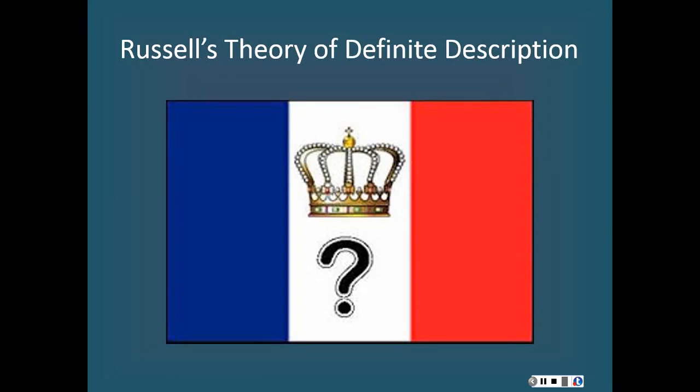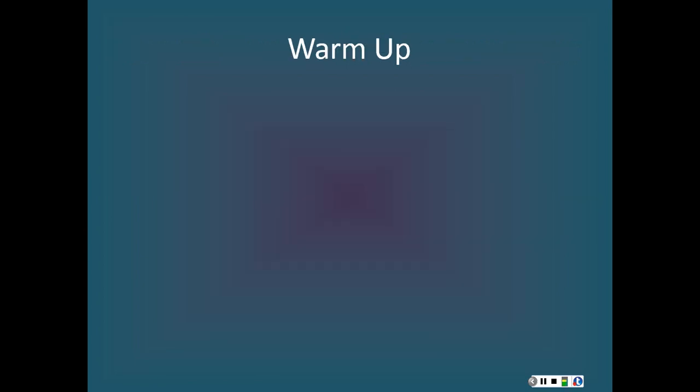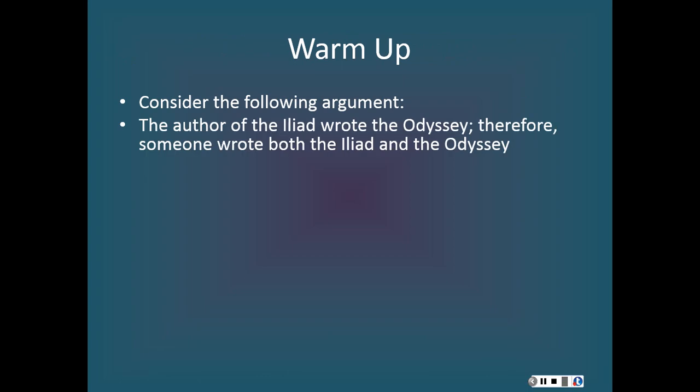In this lecture, I'd like to talk about the philosopher Bertrand Russell's theory of definite description. To warm up to this topic, consider the following argument: The author of the Iliad wrote the Odyssey. Therefore, someone wrote both the Iliad and the Odyssey.